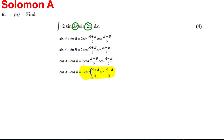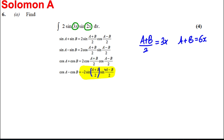We want (a+b)/2 = 3x, i.e. a+b = 6x. And we want (a-b)/2 = 2x, i.e. a-b = 4x.